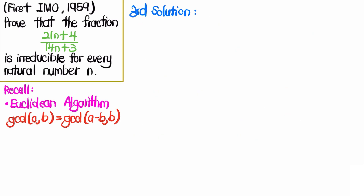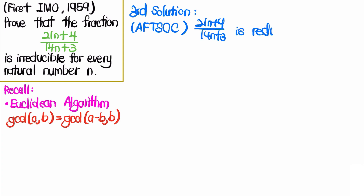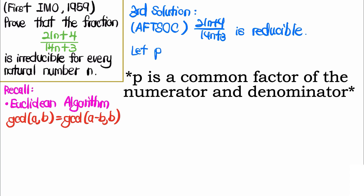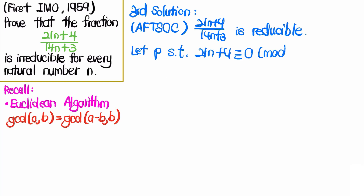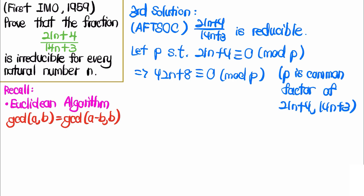Now let's look at the third solution. We again use proof by contradiction, assuming the fraction is reducible. To derive a contradiction, let p be a prime factor shared by the numerator and denominator. Then 21n + 4 ≡ 0 (mod p), which means 42n + 8 ≡ 0 (mod p) upon multiplying by 2. Similarly, since p also divides 14n + 3, we get 42n + 9 ≡ 0 (mod p) upon multiplying by 3.